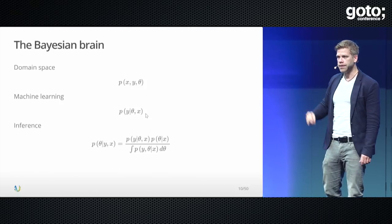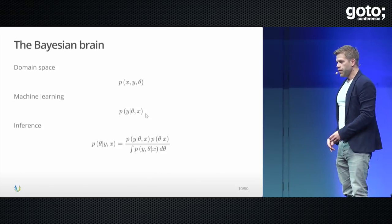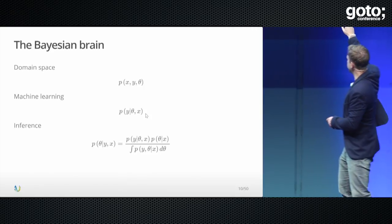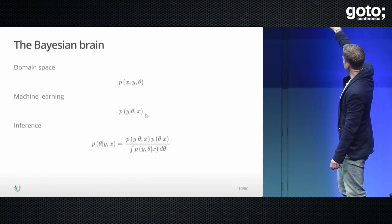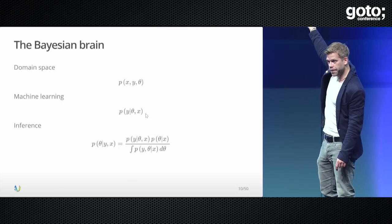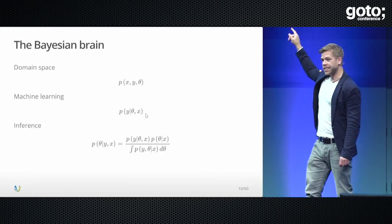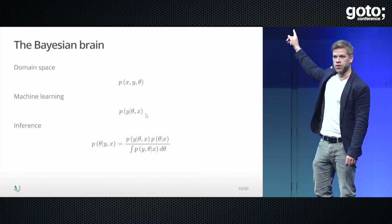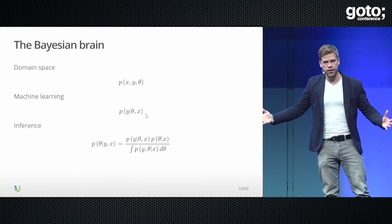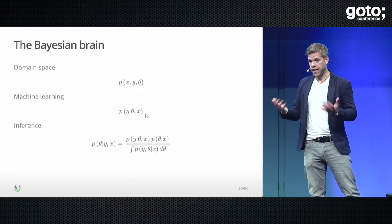Why didn't we do this before? Because it couldn't be done — we simply didn't have the computational power. The denominator in Bayes' theorem is an integral from hell: it looks at every single value of every single parameter and sums that out. You'd have to calculate more things than the number of atoms in the universe, and there are a lot of atoms in the universe.